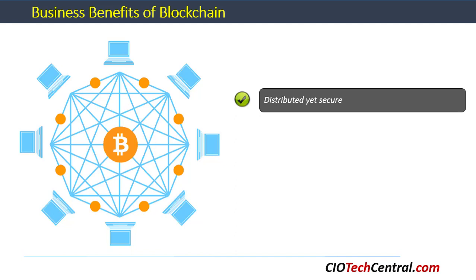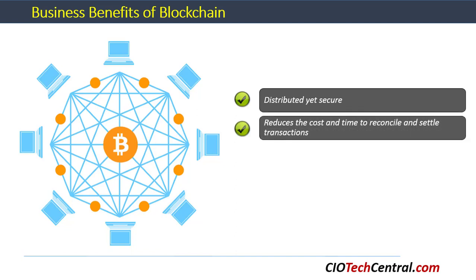As the need for intermediaries goes away, with all parties having direct access to the blockchain ledger and platform, it reduces the cost and time to reconcile and settle transactions. The reduction of cost comes from reduced processing costs across the larger ecosystem, and the reduction of time comes from the elimination of intermediaries and the time they require to carry out their part in the overall business ecosystem.